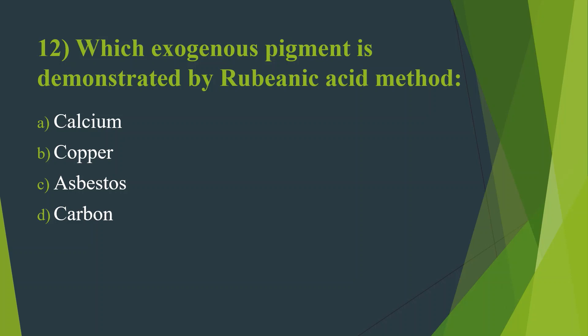Twelfth question: Which exogenous pigment is demonstrated by the Rubianic acid method? Option A: Calcium. Option B: Copper. Option C: Asbestos. Option D: Carbon. Here the answer is Option B — Copper. The staining time is 72 hours — that is prolonged staining. It is the method of choice for histochemical detection of copper in canine — meaning dog — liver.